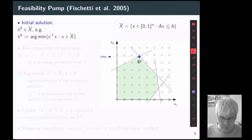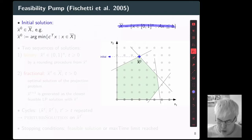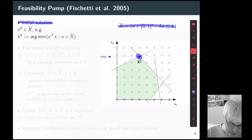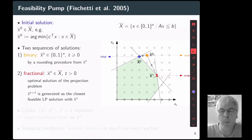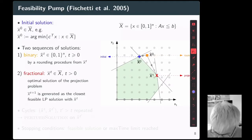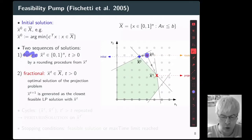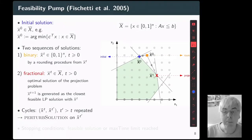Let me give you an overview of feasibility pump — it's quite an easy algorithm. Starting from the linear relaxation of the problem to solve, feasibility pump starts from an initial solution obtained by computing the optimal solution of the linear relaxation. After that, feasibility pump performs two main operations. The first is to round a fractional solution into an integer solution — a binary solution. The second operation is to project this binary solution onto the polyhedron of the problem, obtaining in general a fractional solution. Sometimes a cycle may occur.